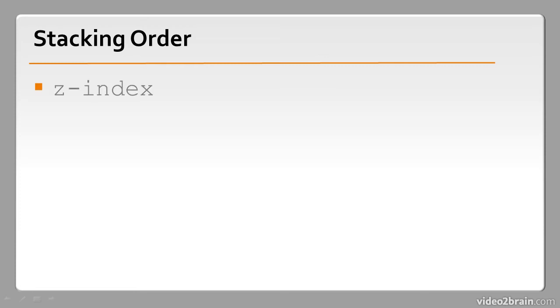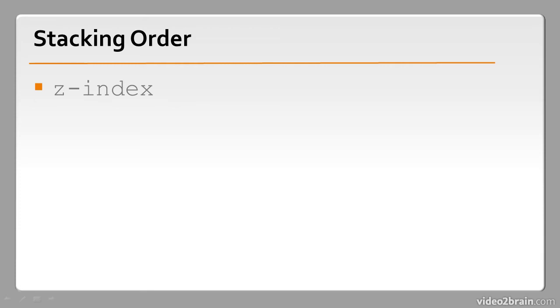The z-index expects a number. When two elements overlap, the one with the higher z-index appears in front of the other. Let's see how all that works in practice.